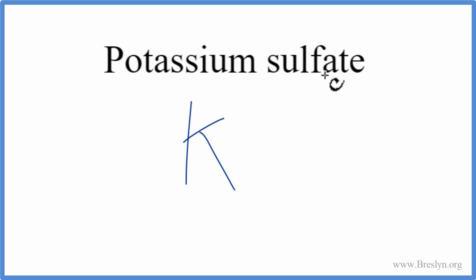Sulfate we won't find on the periodic table. It ends in A-T-E. This is a polyatomic ion. So we can look this up on a table of common polyatomic ions, or you could have it memorized. Sulfate is SO4, 2 minus.